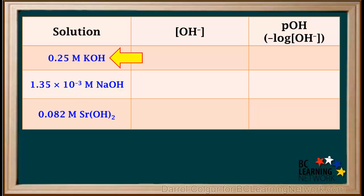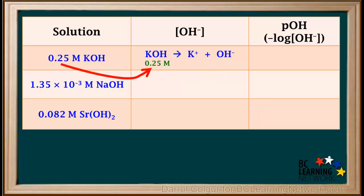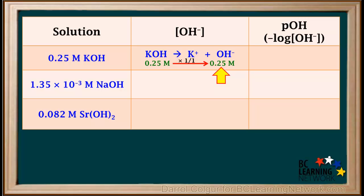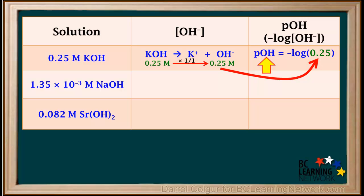We'll start with the 0.25 molar KOH. KOH is a strong base, which completely dissociates into one K⁺ and one OH⁻ ion. The concentration of KOH as a whole is 0.25 molar, and the molar ratio of OH⁻ to KOH is just 1 to 1. So the concentration of OH⁻ is also 0.25 molar. So the pOH will be the negative log of 0.25, which comes out to 0.60. This is expressed to two significant figures, the same as the number in the given concentration, 0.25 molar.